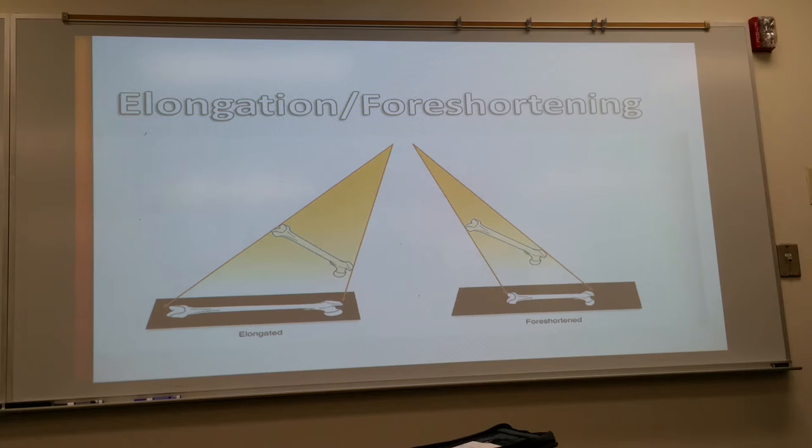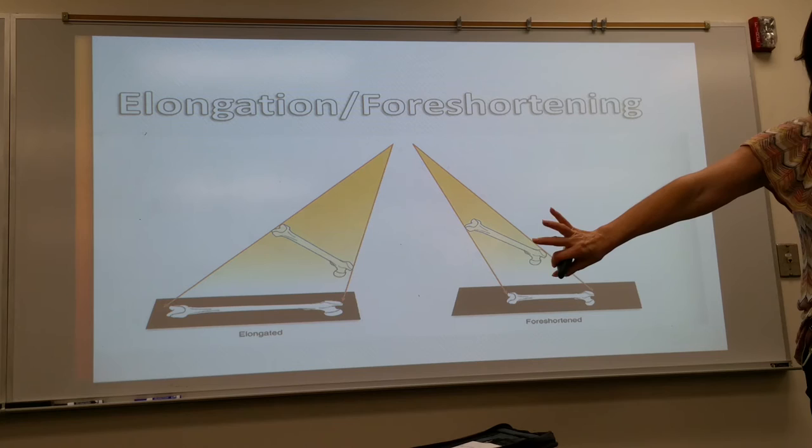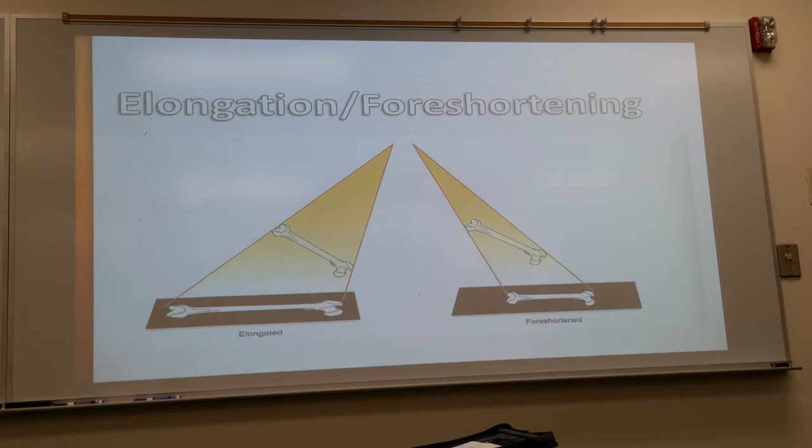And one thing that is not shown up here, the x-ray tube can actually be moved. We could have the bone flat and the x-ray tube angle across, and that will give elongation. So any one of those three movements, the x-ray tube being angled, the body part being angled, or the image receptor being angled, will give us either elongation or foreshortening.